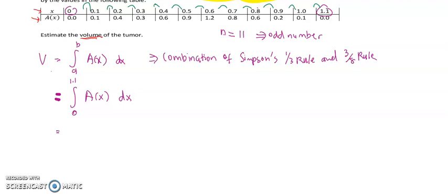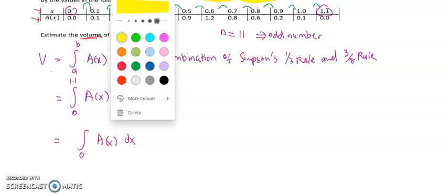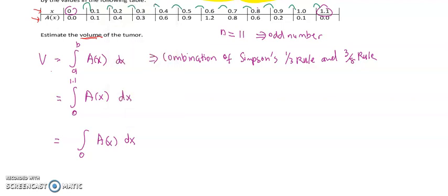...the formula will look like this: the integration of A(x)dx from 0 until 0.8, since our n is 11. For the first 8 intervals, we must use Simpson's 1/3 rule.